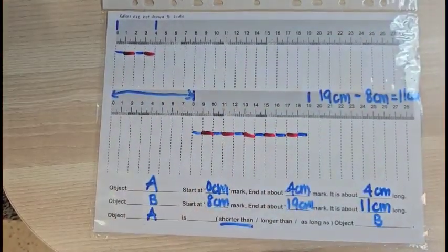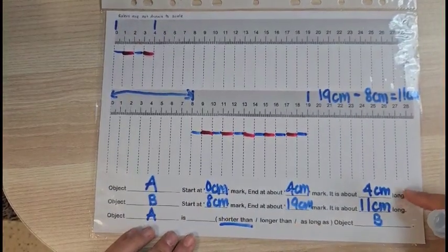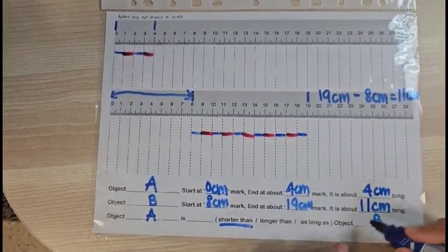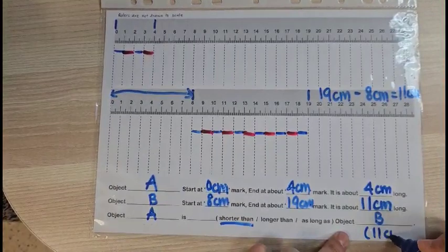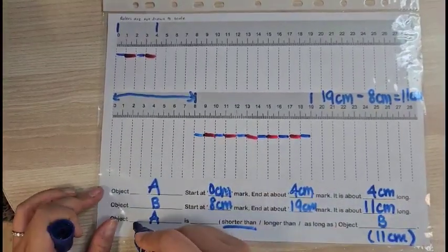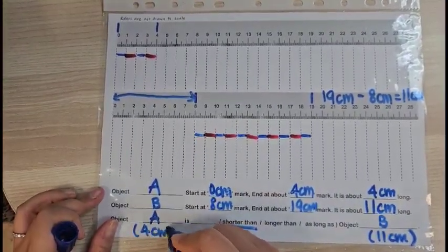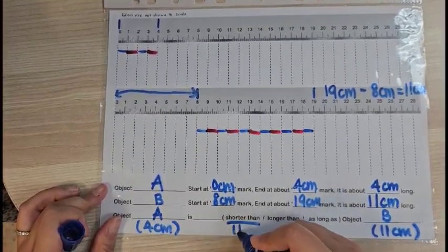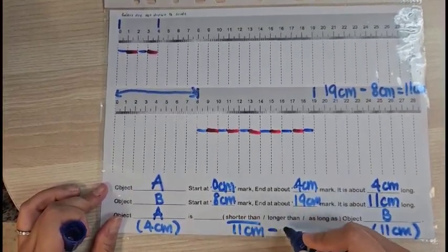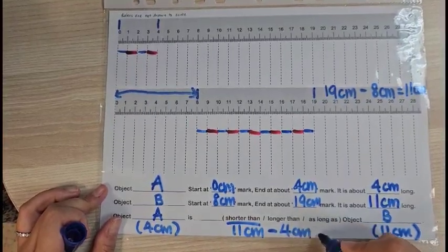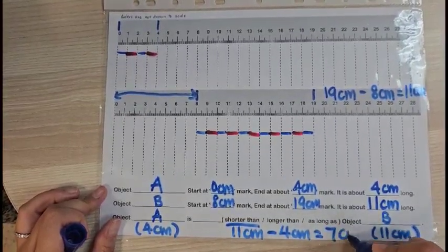How much shorter? We have to compare these two lengths, right? So let me write it here again. This is 11 cm and this is 4 cm. How do I compare them? I would take 11 cm minus 4 cm to give me 7 cm.